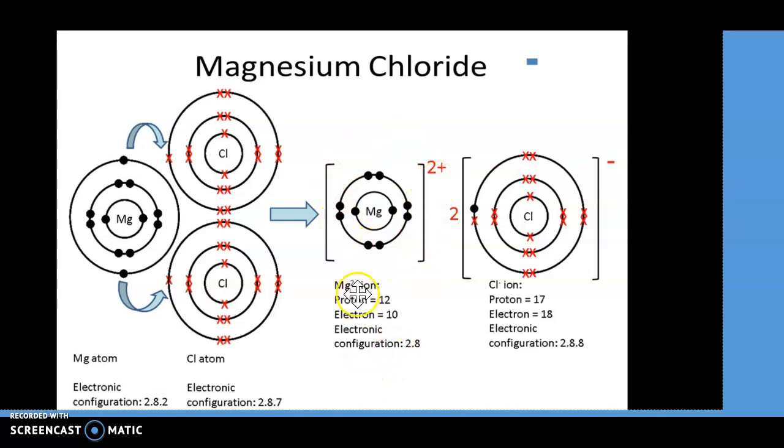So when magnesium loses the two electrons from the outer shell, it gains a 2+ charge and the new electronic configuration is 2, 8.